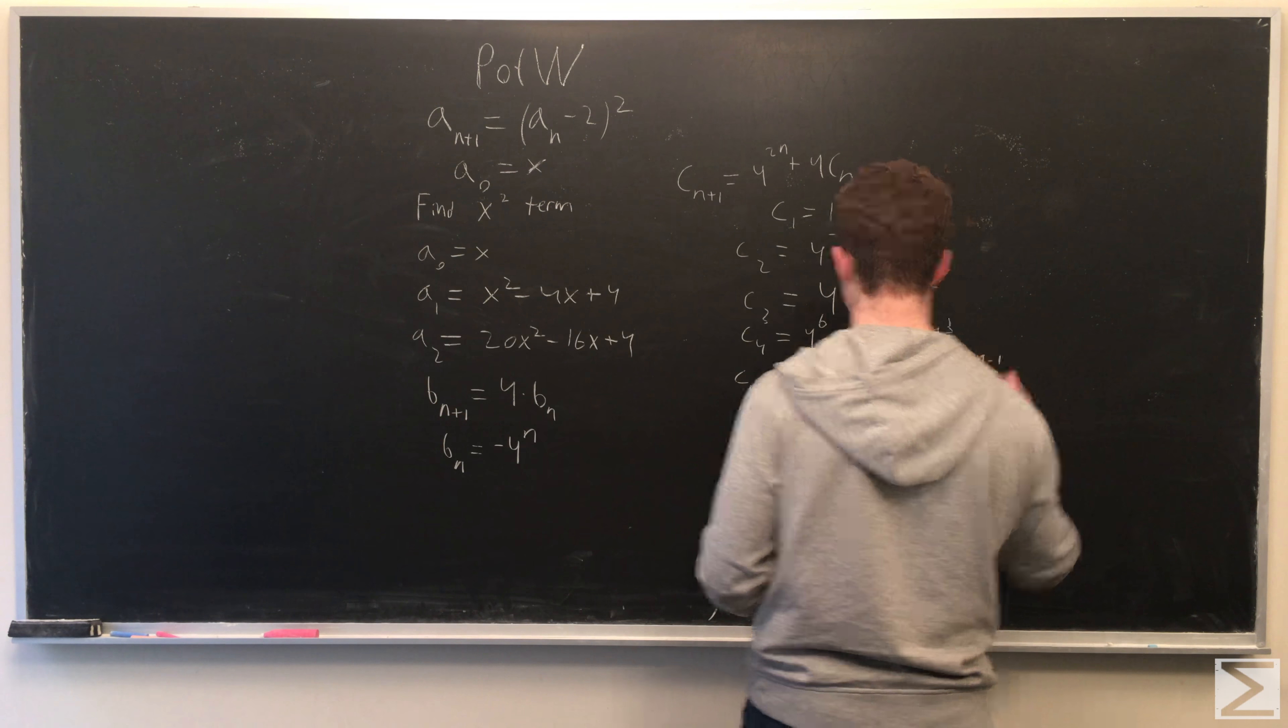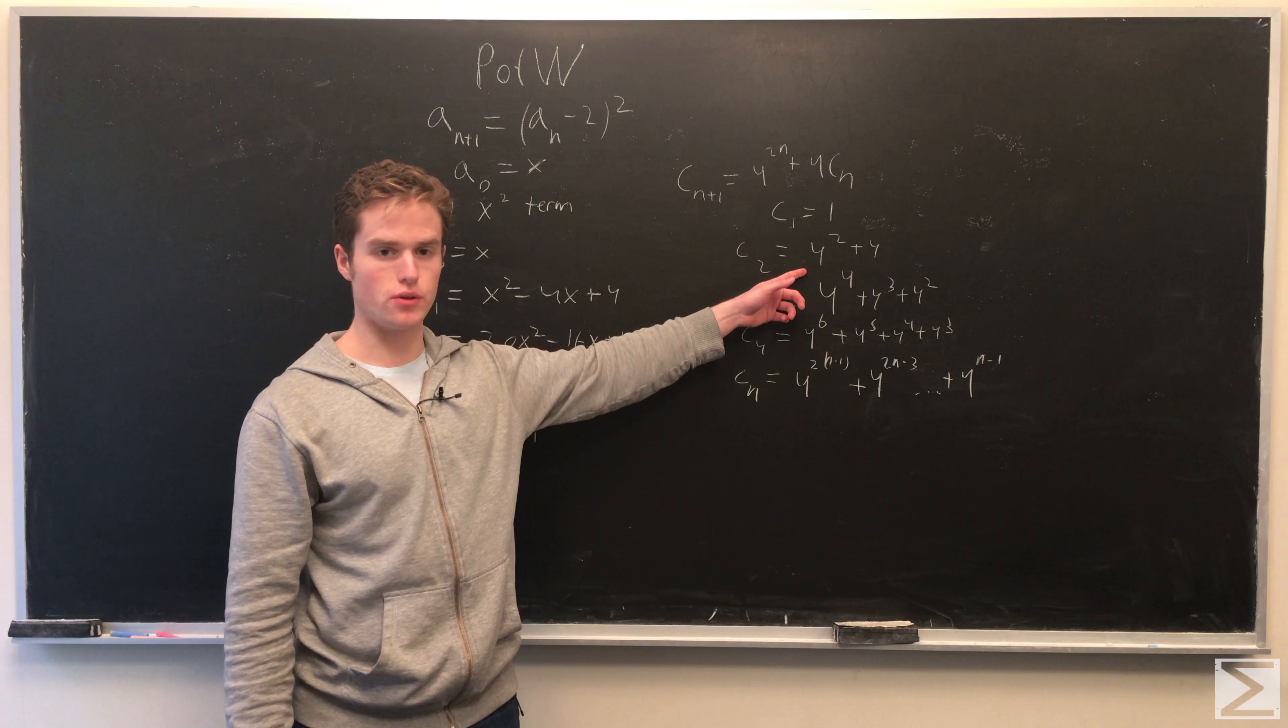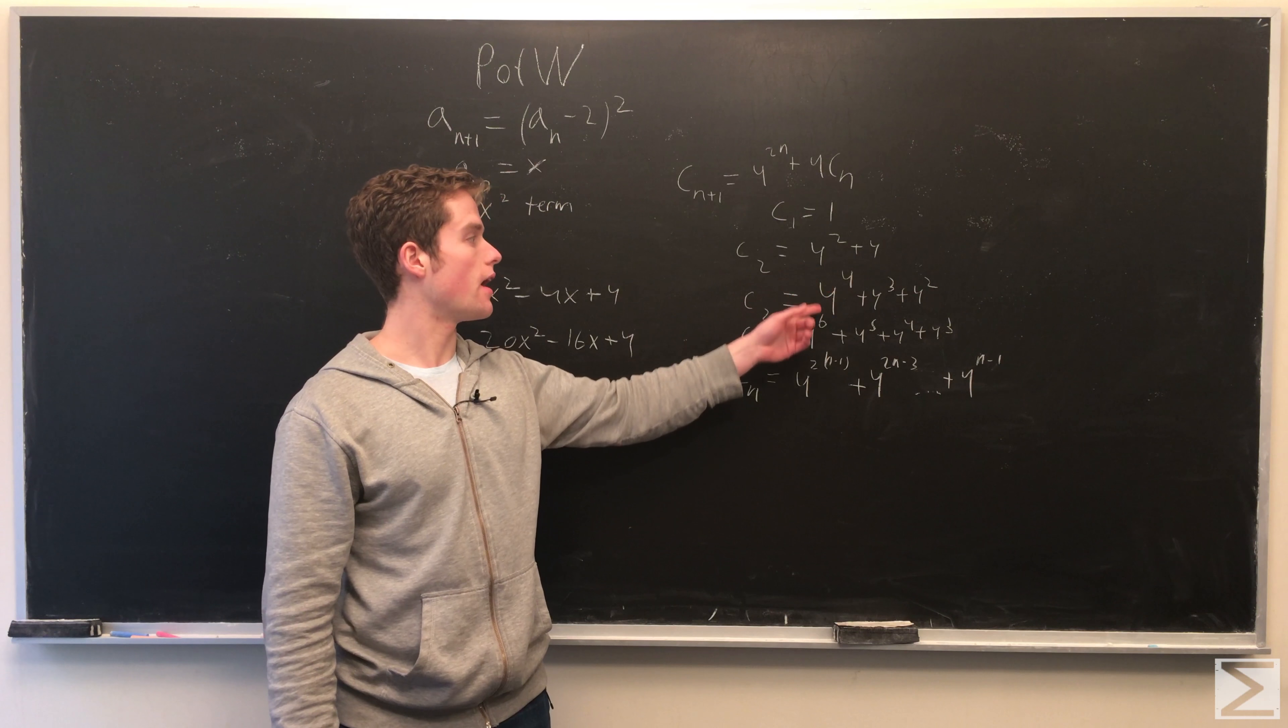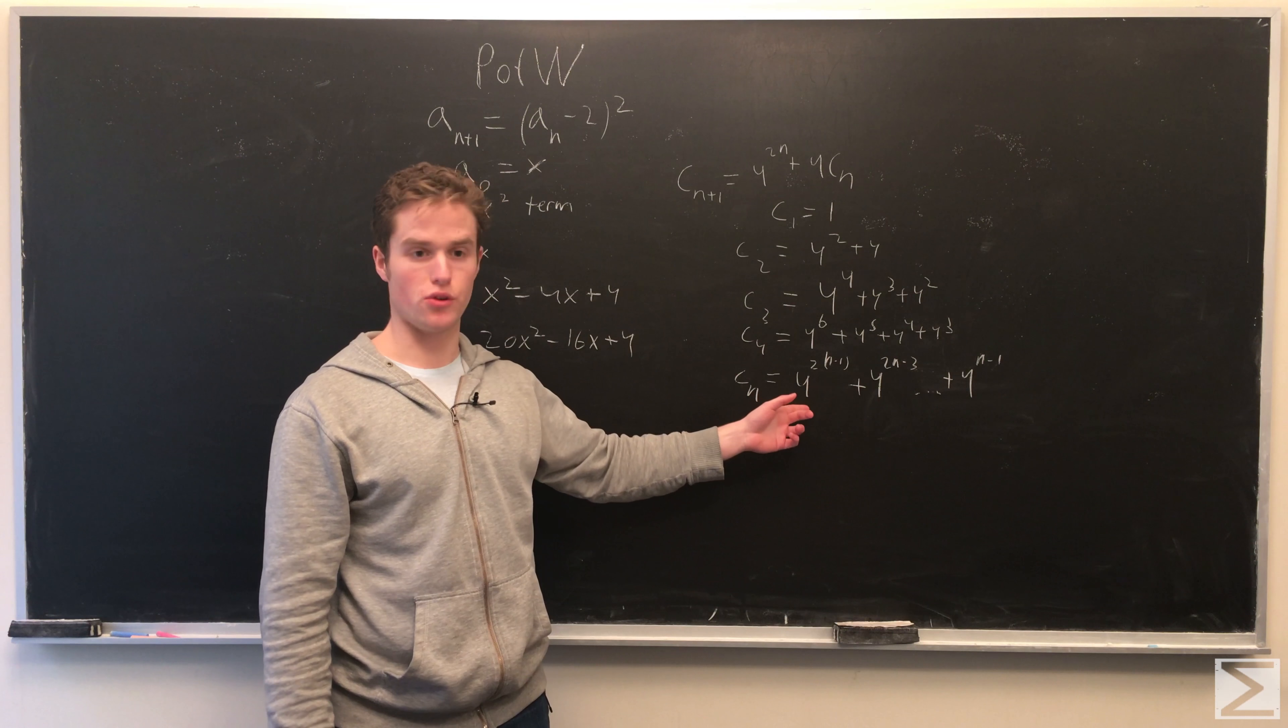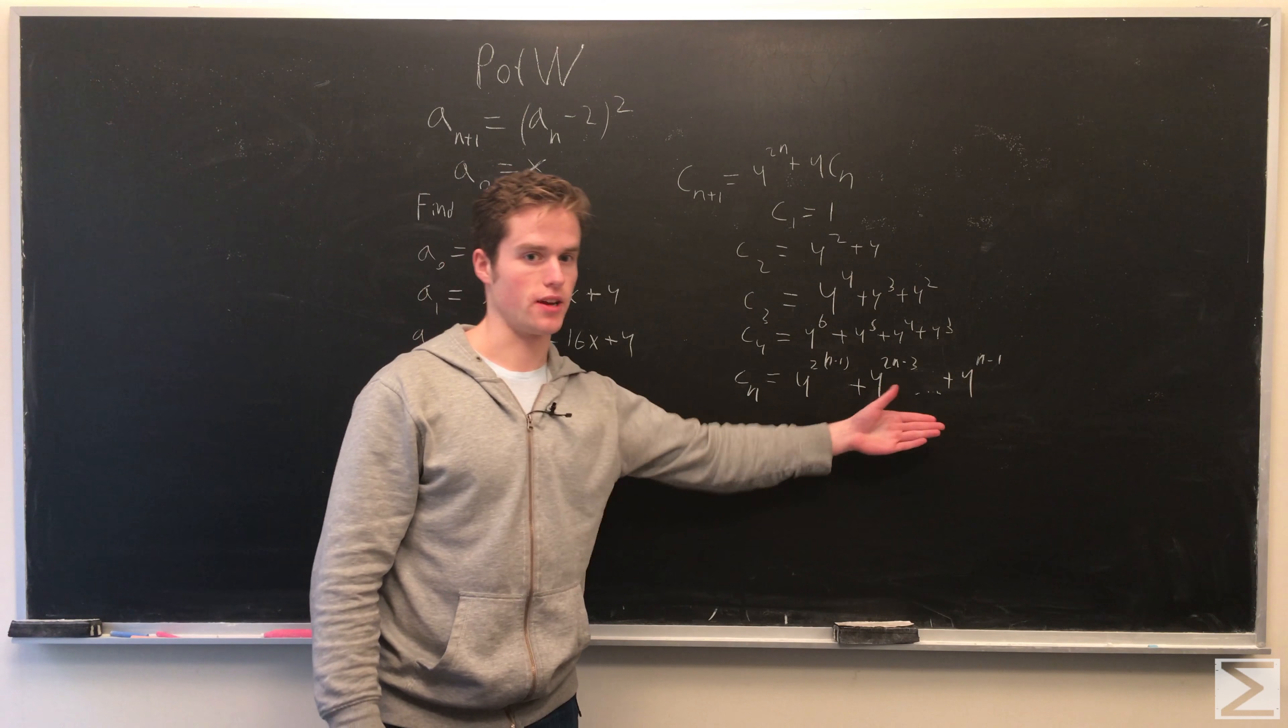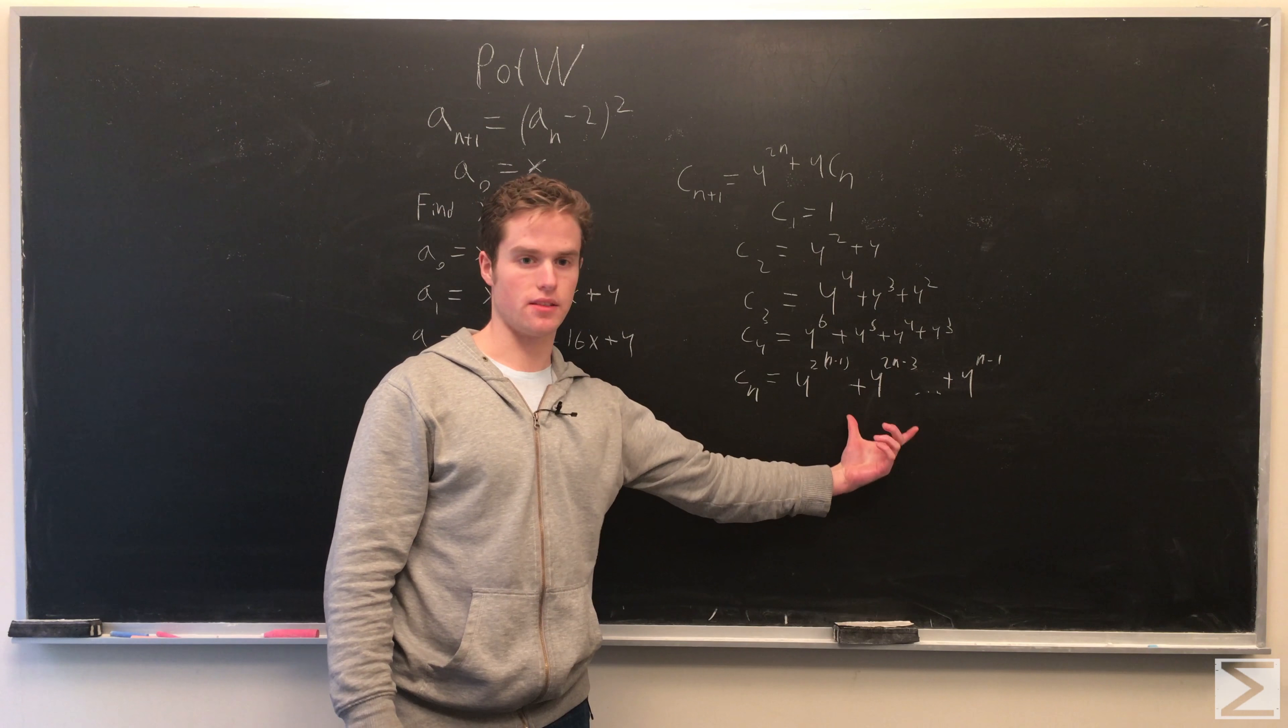So, we see in general, cn can be represented as the sum from 4 of the 2n minus 1 to 4 of the n minus 1. And we see this by, if you calculate c2, it's 4 squared plus 4. You multiply this by 4 and then add 4 of the 2n minus 1 for each term. And it ends up working out, so you get this nice summation. And to condense this thing,